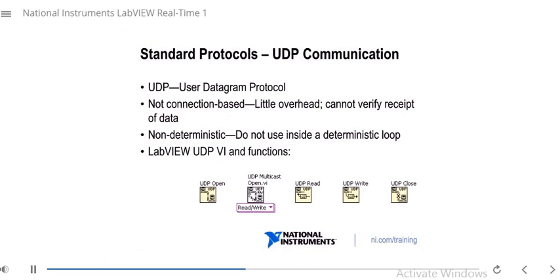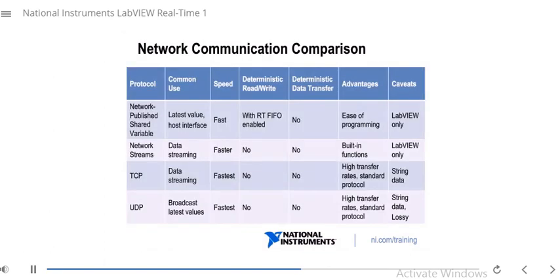UDP stands for User Datagram Protocol and is not connection-based, which differs from TCP. One advantage is there's very little overhead; however, you cannot verify receipt of data. A common use of UDP is to broadcast data — for example, an application collecting data can broadcast it over the network and others can listen and look at that data. A good analogy is a radio station broadcasting music without knowing how many people are listening, but others can tune in. UDP communication is non-deterministic since it goes out over the network, so don't place UDP functions inside a deterministic loop.